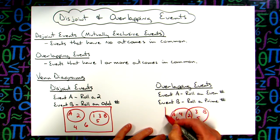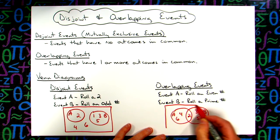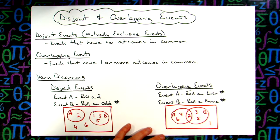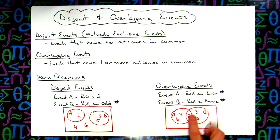One is generally considered not to be prime and it clearly is not even, so then it would fall out here somewhere. But on overlapping events, there's at least one or more of the outcomes that overlap.